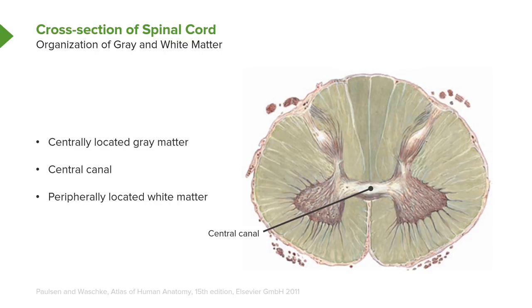Note that the peripheral aspect of the spinal cord — here more laterally, here anteriorly, and over on the opposite side anteriorly and laterally as well — represents peripherally located white matter.